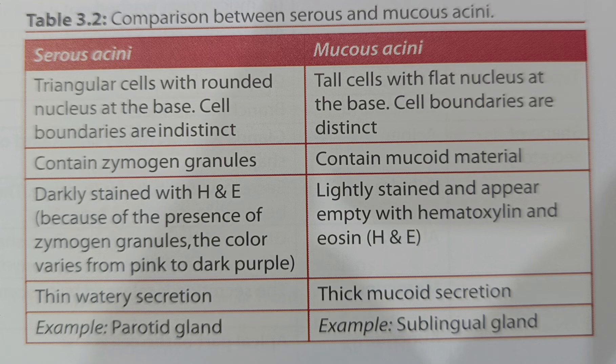Triangular cells are present in serous acini, while tall cells are present in mucus acini. Rounded nucleus in serous acini and flat nucleus at the base in mucus acini. Cell boundaries are indistinct in serous and distinct in mucus acini. The mucoid material in mucus acini lightly stains and appears empty in H&E stain. Thick mucoid secretion is the characteristic feature of mucus acini.